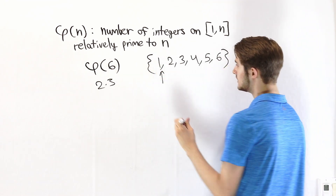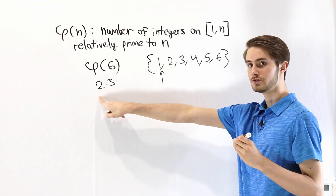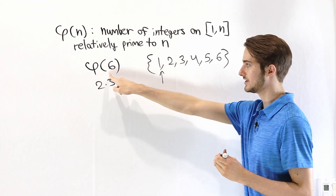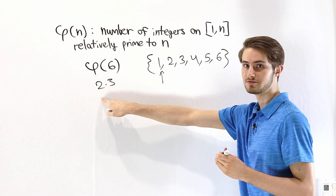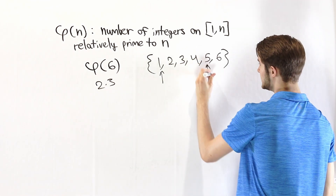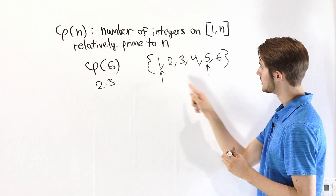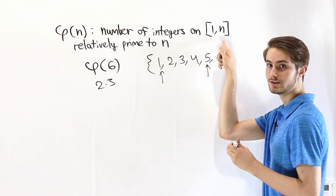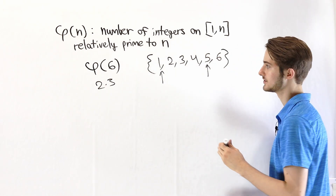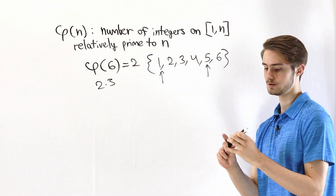That's going to be 1. Not 2, because that includes a 2. Not 3. 4 includes a 2 as well, so even though 4 doesn't divide 6 it still shares a common factor, so they're not coprime. On the other hand, 5 definitely is coprime to 6, and of course 6 is not. So we see that there are two integers on 1 to 6 that are coprime to 6 — they share no factors — and therefore φ(6) is equal to 2.